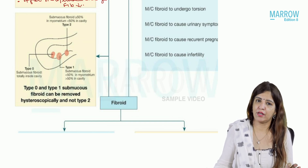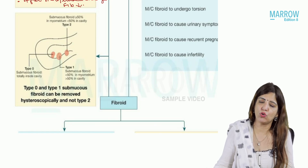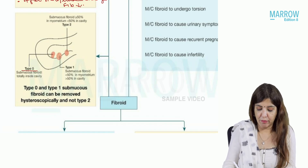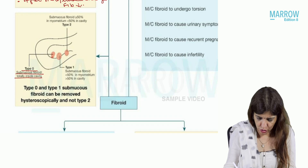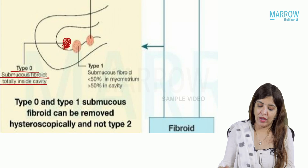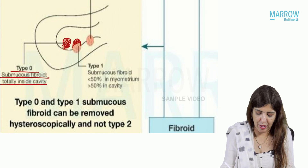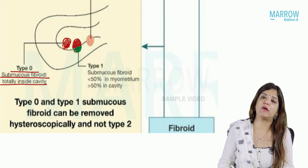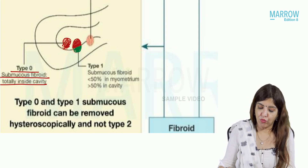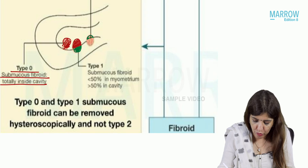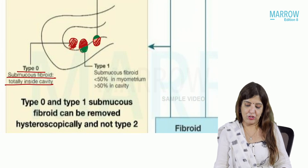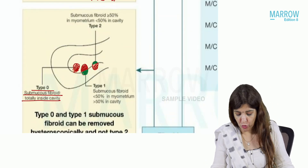There is something called the FIGO classification of fibroid. In the submucous variety of fibroid we have Type 0, Type 1, and Type 2. Type 0 submucous fibroid means the entire fibroid is inside the uterine cavity. In Type 1 fibroid, more than 50% of the fibroid is inside the cavity and less than 50% is inside the myometrium. In Type 2 fibroid, less than 50% is inside the cavity and more than 50% is inside the myometrium.